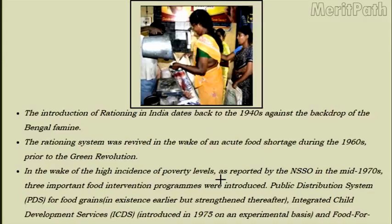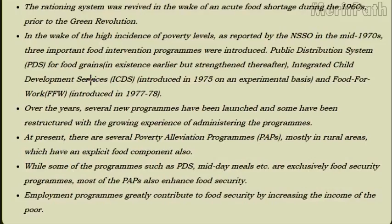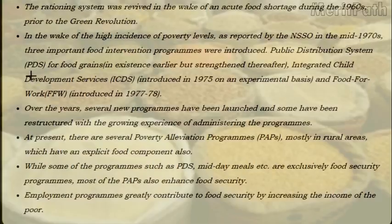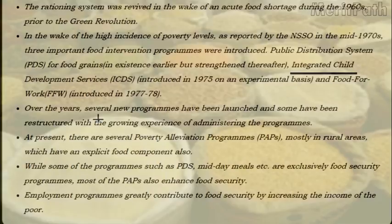The rationing of food in India began after the Bengal famine in 1943. The rationing system was revived during the acute food shortage of the 1960s prior to the Green Revolution. The high poverty ratio reported by the National Sample Survey Organization prompted the government to launch three important food security programs, including strengthening of the existing public distribution system and the introduction of the Integrated Child Development and Food for Work schemes.